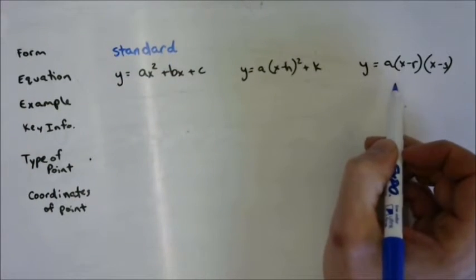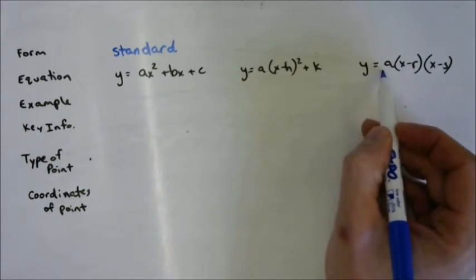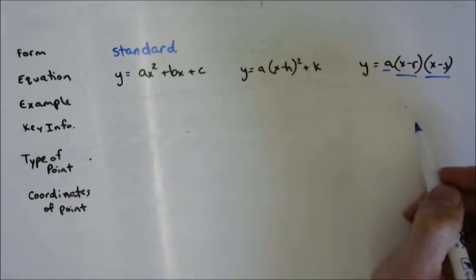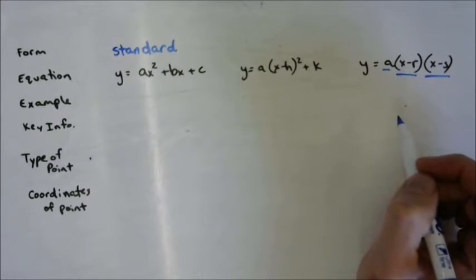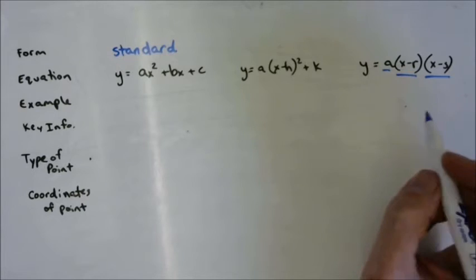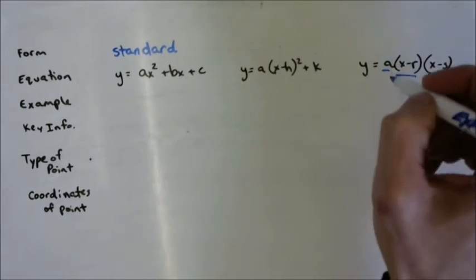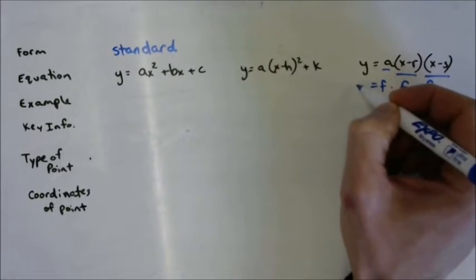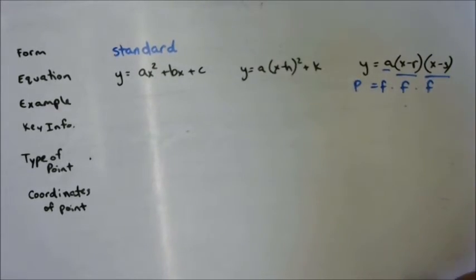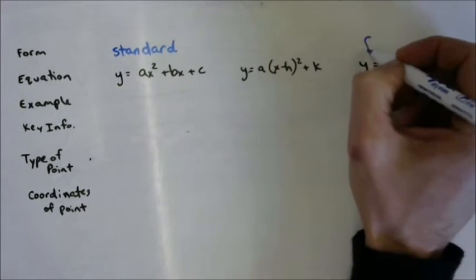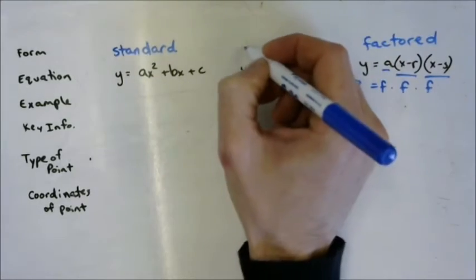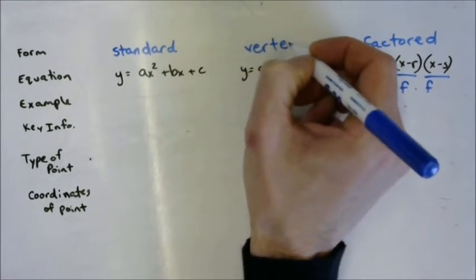This guy over here has factors, right? It's a times this group times this group. Anytime you multiply something together, the things that you multiply together to get the product are called factors — factor times factor times factor equals product. So this is factored form, which leaves this as vertex form.